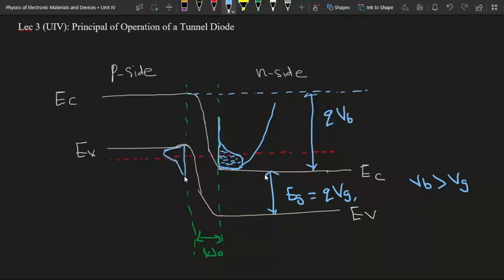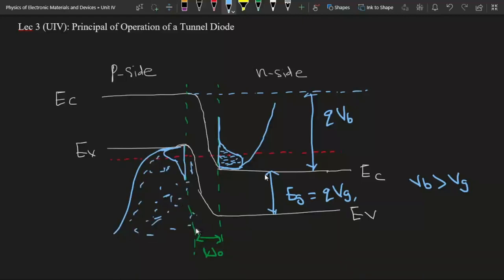In the p-side, there is a density of empty states, just opposite to the n-side. These are the empty states. All these states are filled here in the p-type, and also here, so these states are all filled. But in the p-side, only these states are empty in the valence band, and for the n-side, these states are filled in the conduction band.